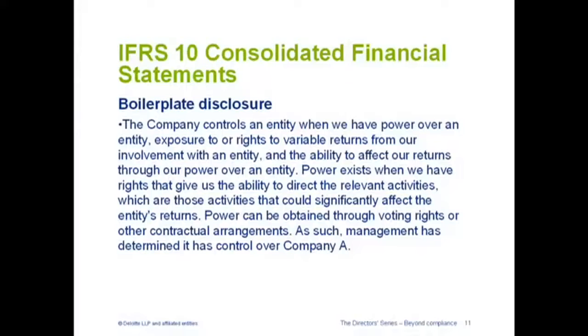To me the big observation on this standard is on disclosure and providing good information as to why a parent does control a subsidiary. That's really what's important. I've got a couple of examples. The first is an example of what I would call boilerplate disclosure — a company indicates that they control the entity when they have power over the entity, and power exists when they have rights to direct the relevant activities.